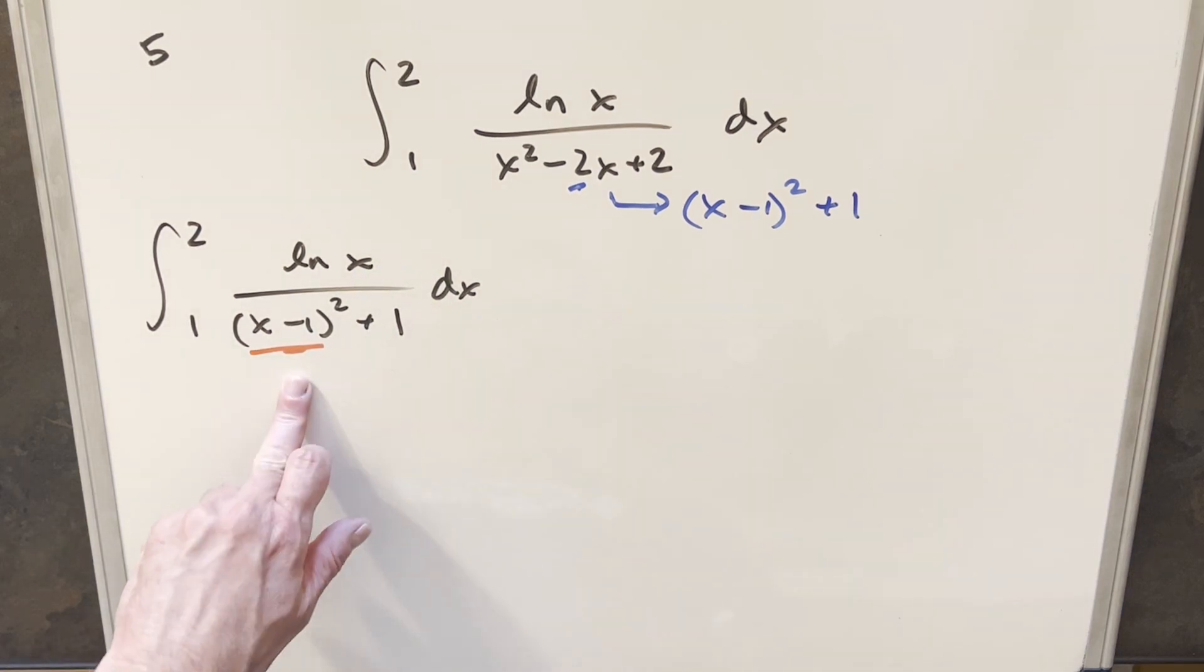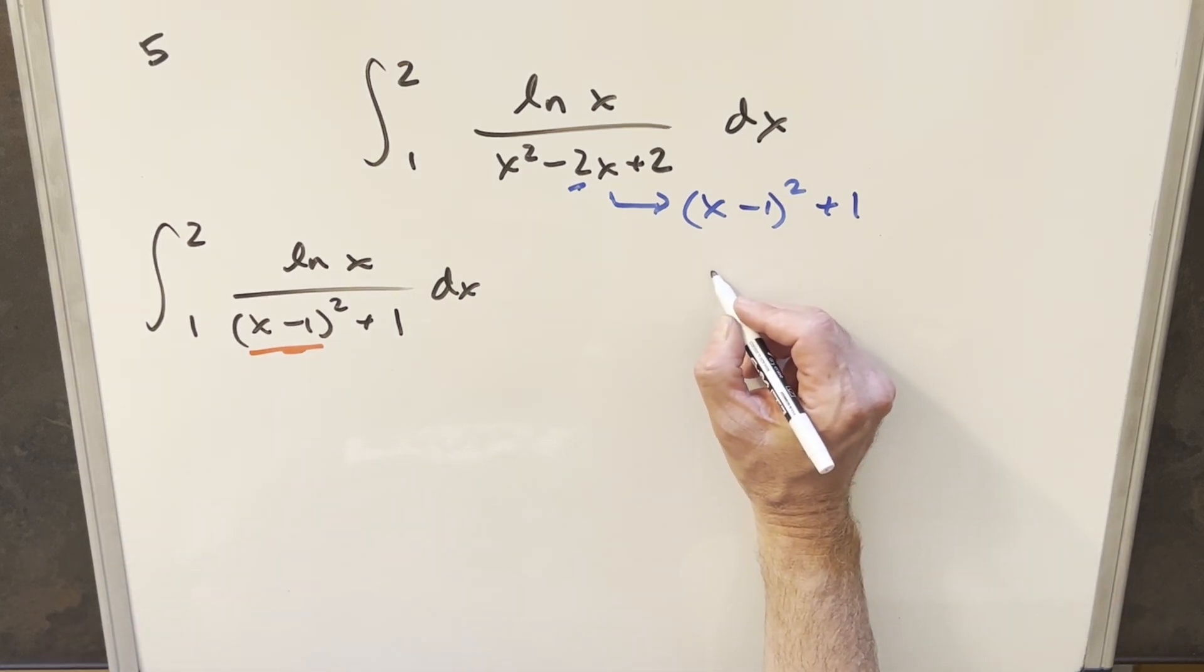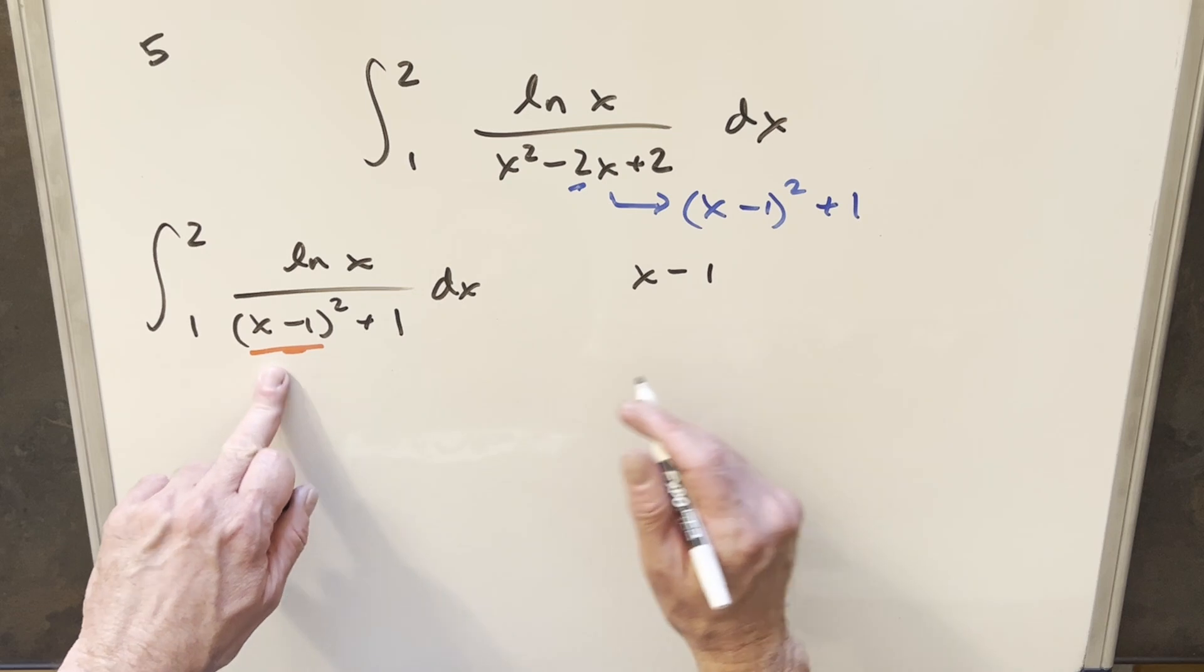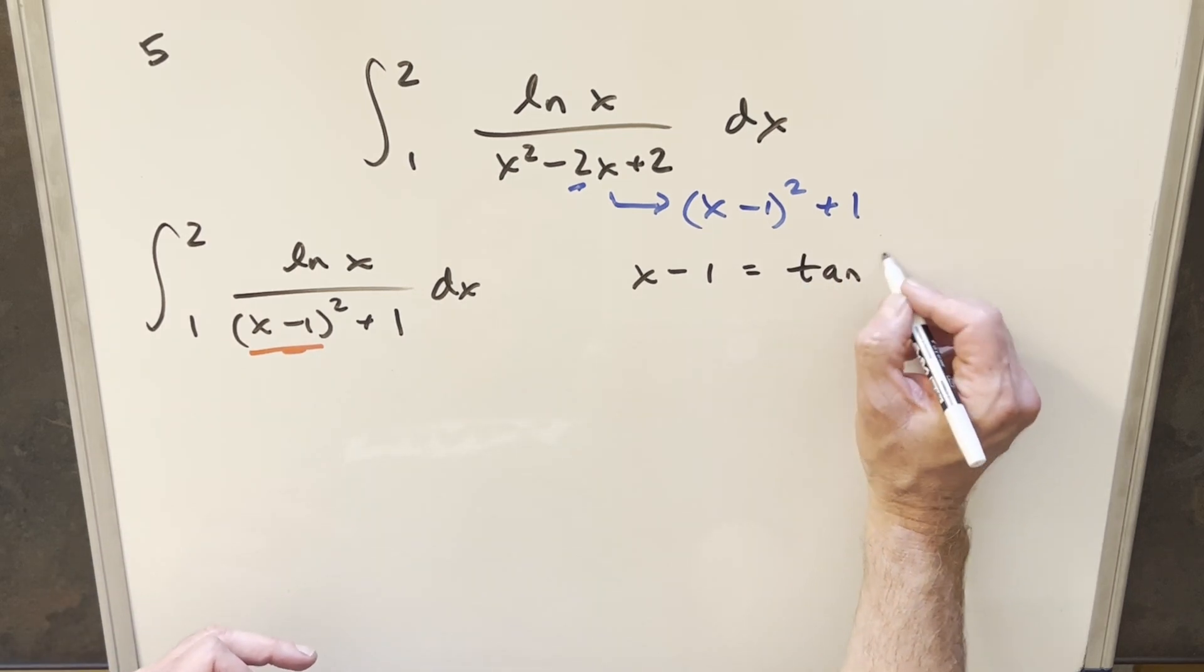Well, I think what I can do to save a step is just do a trig substitution instead to kind of consolidate. So what I'm going to do for that is for x minus 1, let's set that equal to tan of t.